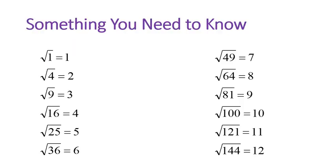First off, this list, this is a list of numbers we call perfect squares. So the numbers 1, 4, 9, 16, for example, those are perfect squares. And when you take the square root of a perfect square, you get a nice even number.